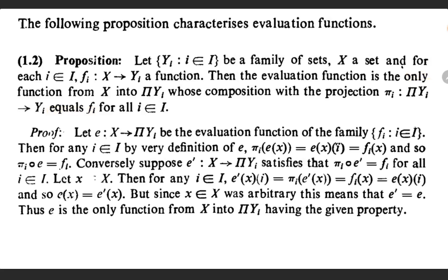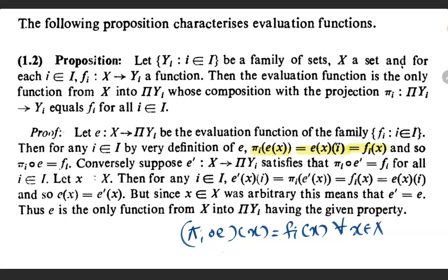For the proof, let us assume that e from x to product yi is the evaluation function of the family fi. Then for any i element of I, using the definition of e, we have pi_i composition e of x equal to the ith coordinate of e(x), that is e(x)(i), and using the definition, this will be equal to fi(x). So we have pi_i composition e of x equal to fi(x) for every x element of capital X, and this implies that pi_i composition e is equal to fi. So we have proved that the composition of the evaluation function with the projection function is equal to fi.